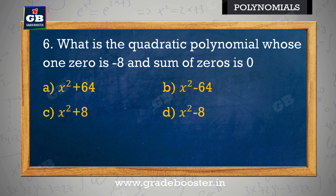What is the quadratic polynomial whose one zero is minus 8 and sum of zeros is zero? Ek quadratic polynomial kya hai jiska ek zero minus 8 aur sum of zeros zero hai? a) x² + 64, b) x² − 64, c) x² + 8, d) x² − 8.